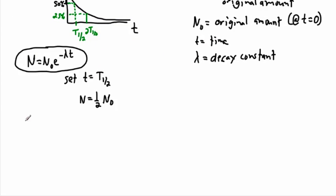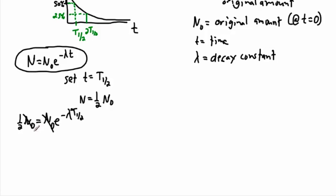Now let's do the math. Everywhere we see t, we put in t one-half; everywhere we see n, we put in half n₀. So one half n₀ equals n₀ times e to the minus lambda t one-half. The n₀ values cancel out, and now we have one half equals e to the minus lambda t one-half.